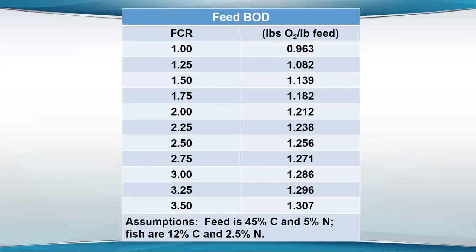There are some values for what would be the BOD of feed. The assumption in this particular calculation is that the feed is about 45% carbon and 5% nitrogen. The values would be slightly different with other concentrations of carbon and nitrogen. As the FCR increases in the pond, the more the feed BOD per pound of feed. The main thing is the more feed you put in, the greater the oxygen demand — that's the only point I'm making here.